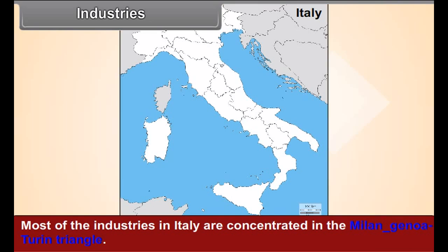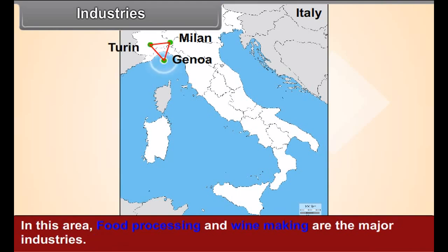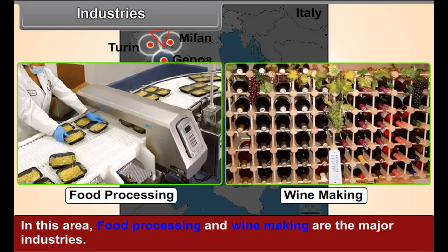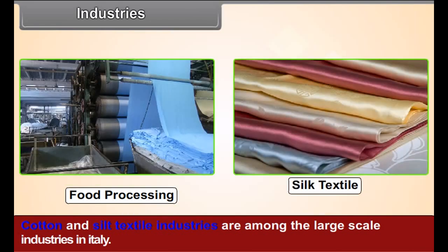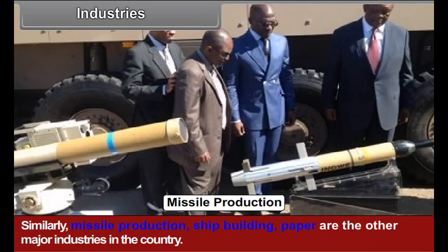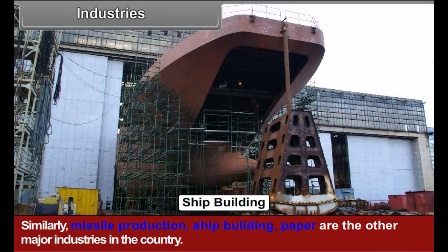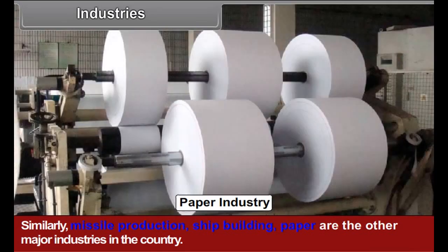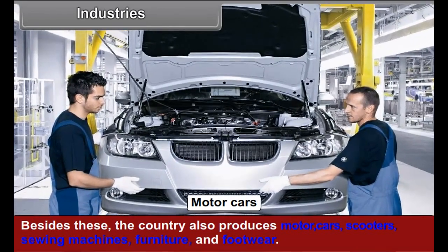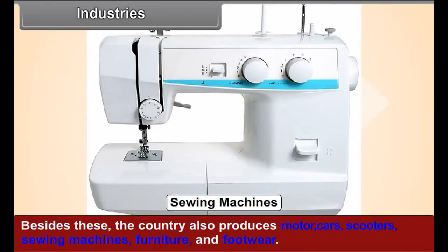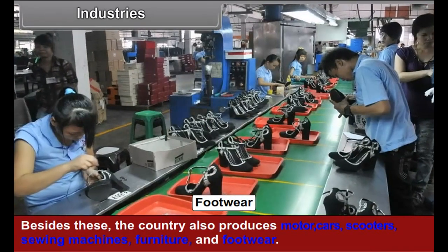Industries: most of the industries in Italy are concentrated in the Milan-Genoa-Turin triangle. In this area, food processing and winemaking are the major industries. Cotton and silk textile industries are among the large-scale industries. Similarly, missile production, shipbuilding, and paper are other major industries. The country also produces motor cars, scooters, sewing machines, furniture, and footwear.